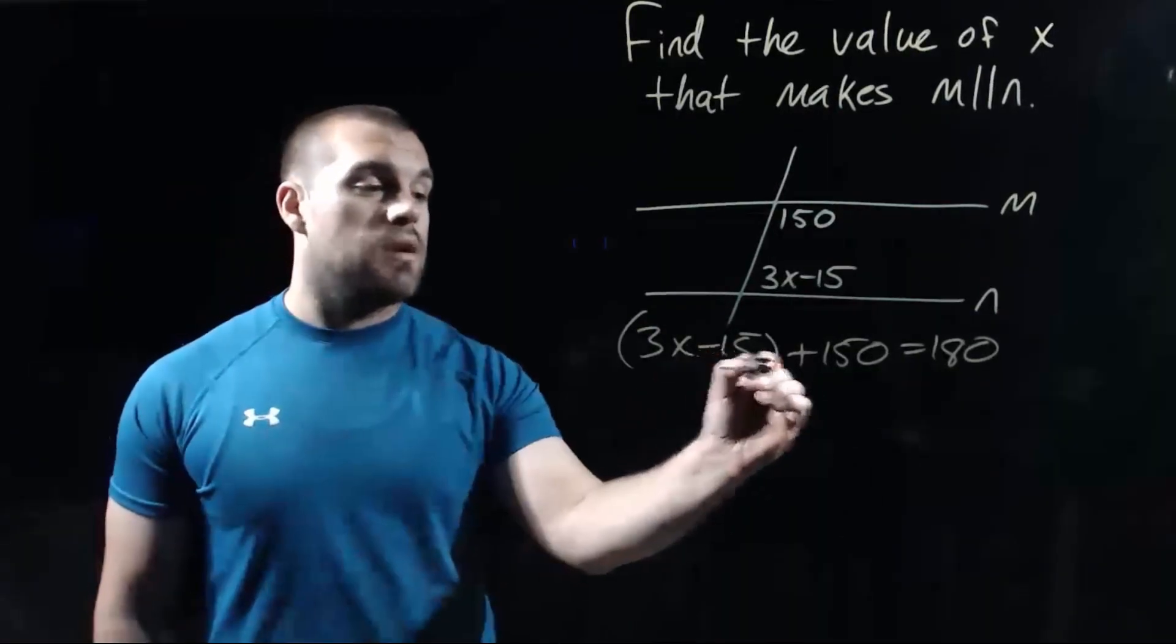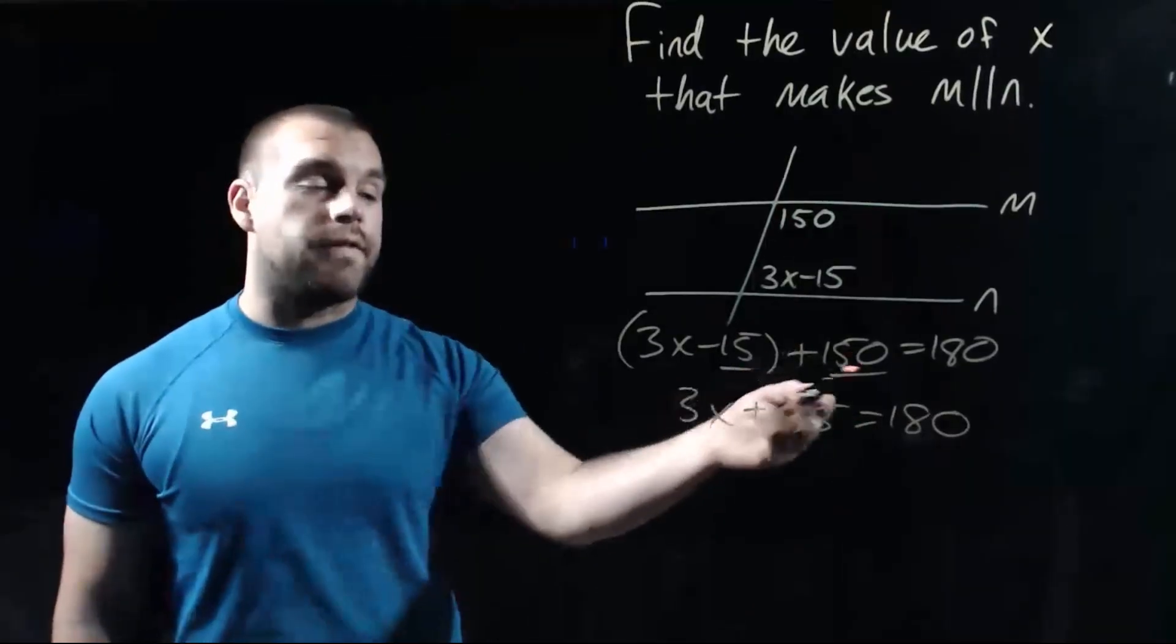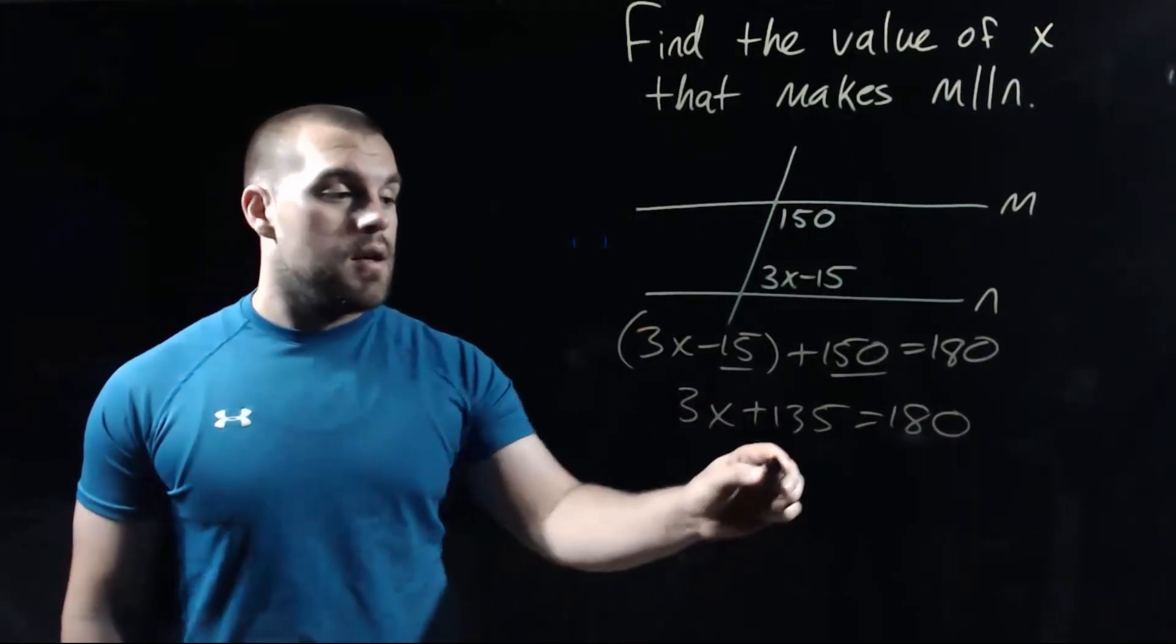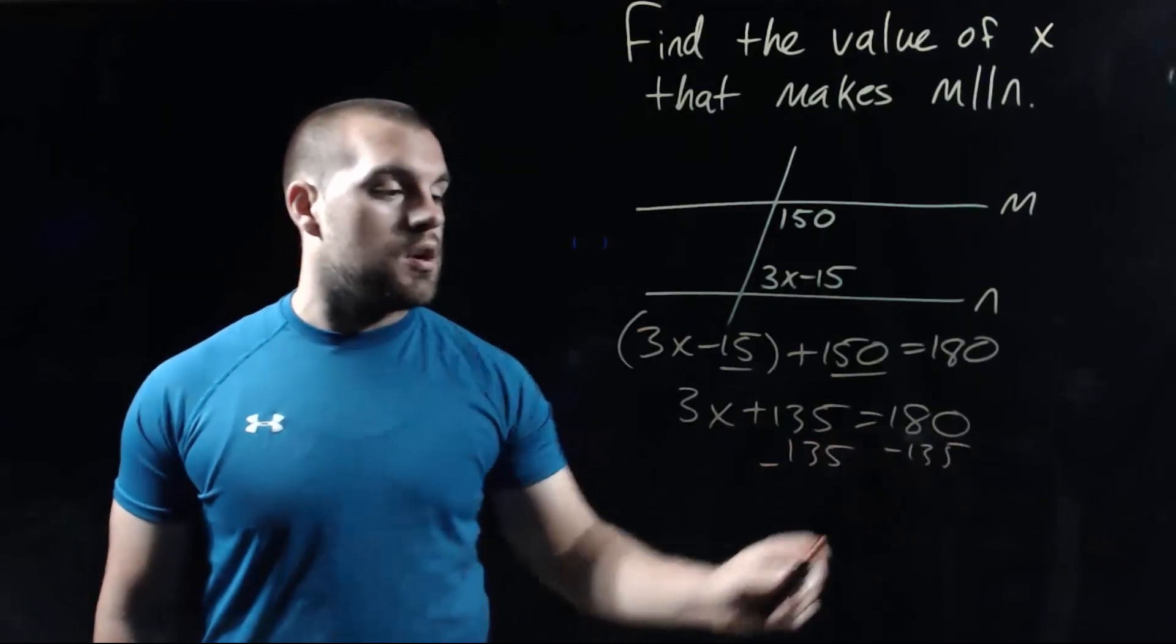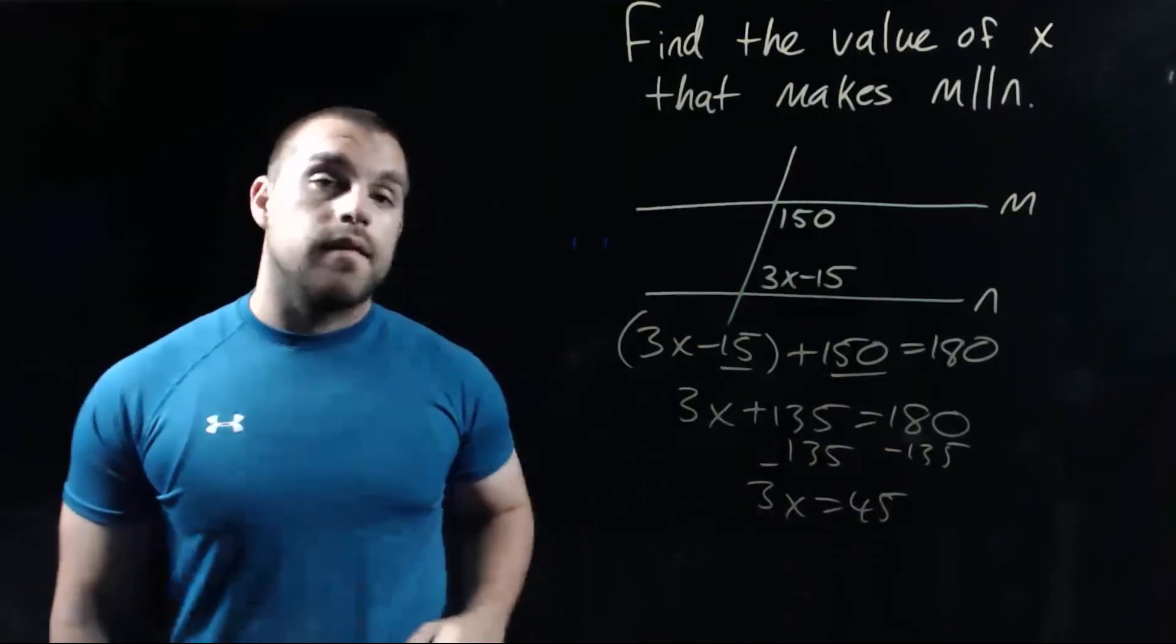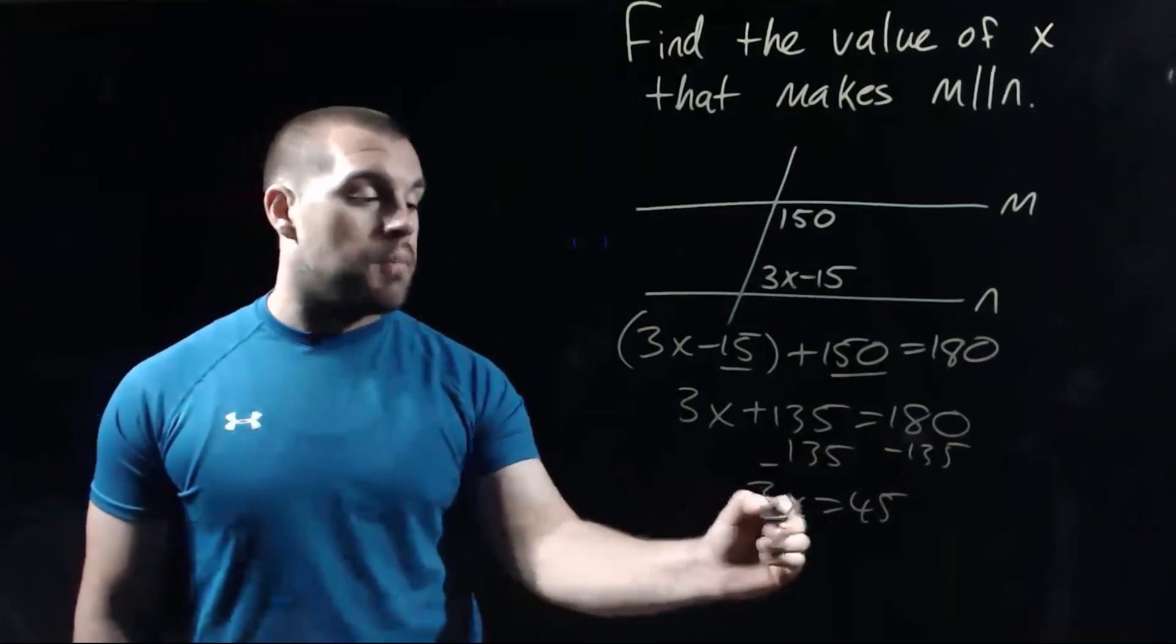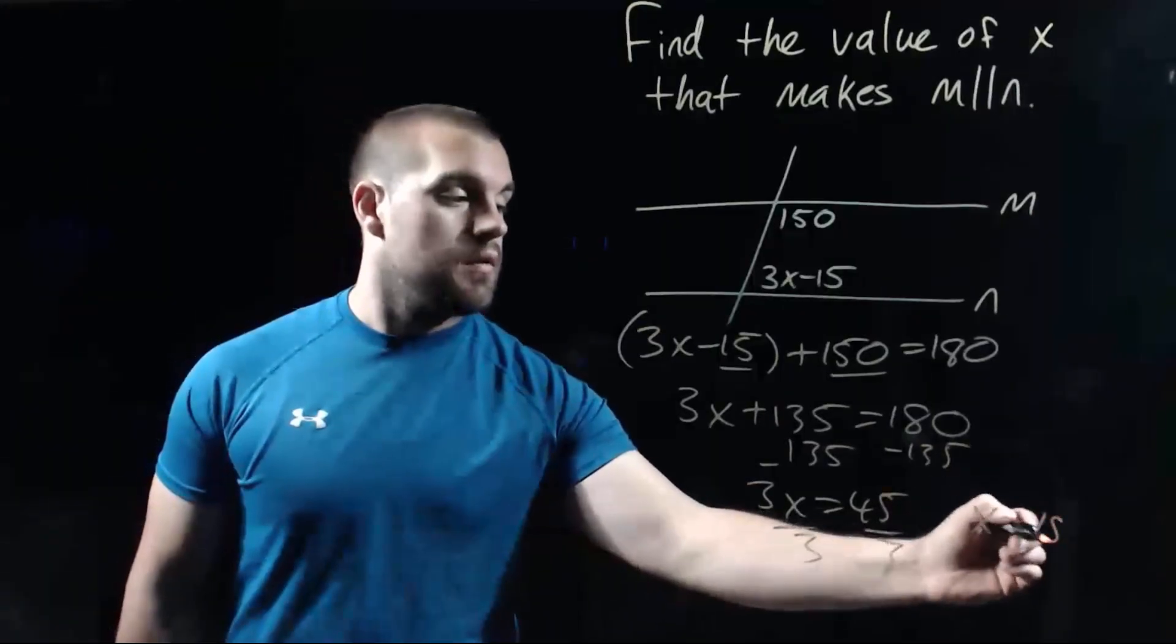Now what I would do is I would combine these like terms. So negative 15 and 150 gives us 135. Then I would subtract that 135 over to the right hand side of the equation. So we get 3x equals 45. Then for the last step, I'm going to divide both sides by 3. So we get x equals 15.